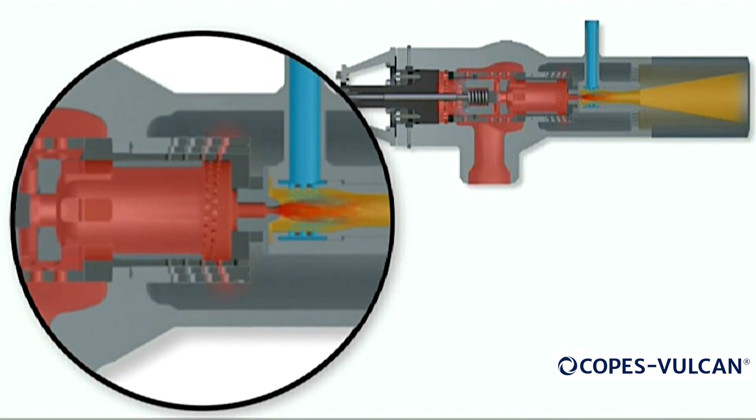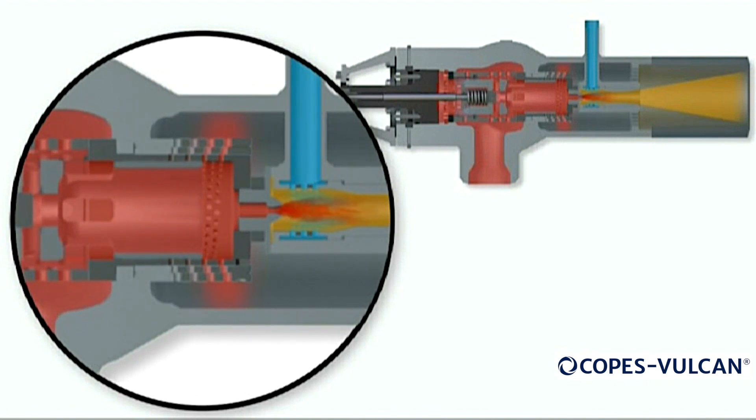As the main plug opens, steam first enters the valve via a heavy-duty distribution spacer. The steam passes through the spacer by means of numerous holes evenly positioned around the circumference. This heavy-duty distribution spacer has been specifically designed to negate any upstream pipework-induced flow disturbance being communicated to the main plug.